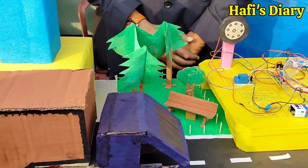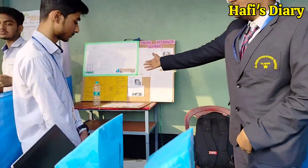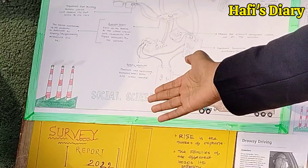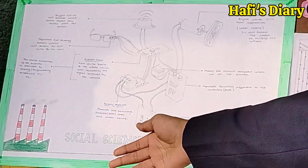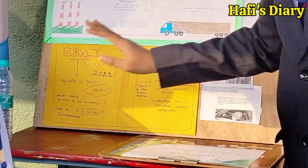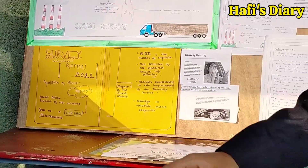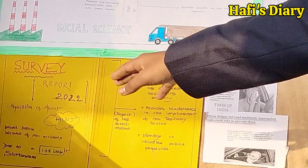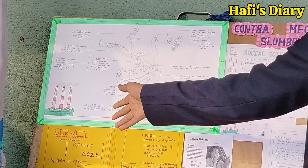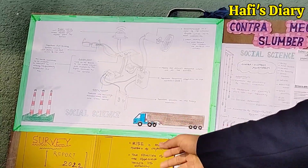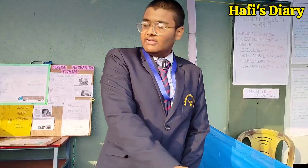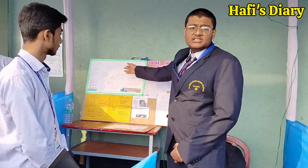We will first provide some data about how dangerous this is. According to a survey report of 2022, about 4 lakh people have died because of accidents, and among them, 1.6 lakh people have died due to drowsiness. We can see that it is a huge problem for society and for the sector itself. To prevent it, we have developed this mechanism.